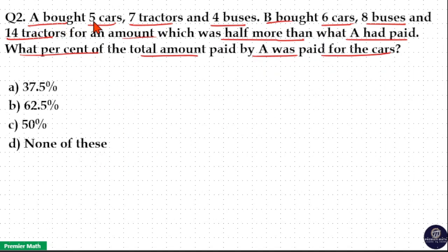Here, A bought 5 cars, 7 tractors, and 4 buses. Consider A paid A amount for all this.